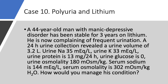Case number 10, polyuria and lithium. A 44-year-old man with manic depressive disorder, stable on lithium for three years, is complaining of polyuria. A 24-hour urine collection showed a volume of 3.2 liters — anything over three liters is polyuria. Urine sodium is 35, urine potassium is 33, urine protein is 13 mg per 24 hours — essentially normal. No glucosuria. Urine osmolality is 180 — low. Serum sodium is 144, serum osmolality is 302 — slightly elevated consistent with high serum sodium.